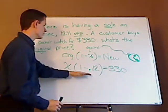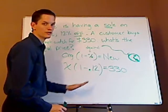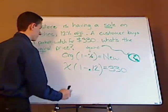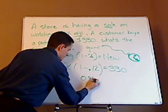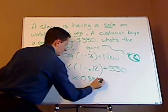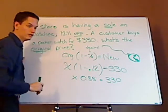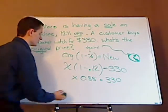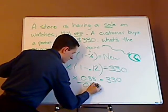Alright, next thing you want to do is you want to simply subtract. What's 1 minus 0.12? 0.88. Alright, next thing you want to do is you're solving for X, so you want to divide both sides by 0.88.